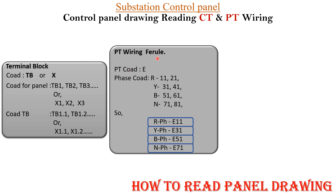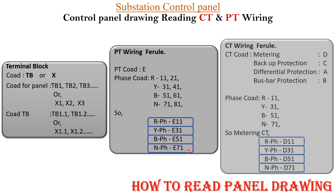For PT wiring ferrule, the code starts with E. The phase codes for the first PT are: R phase 11, Y phase 31, B phase 51, neutral 71. For a second PT, the codes are 21, 41, 61, and 81. So R phase ferrule is E11, Y phase E31, B phase E51, and neutral E71.